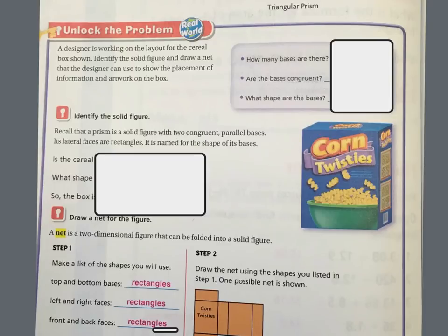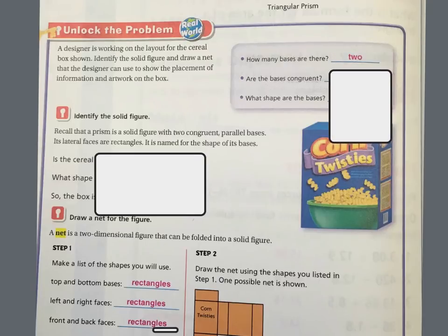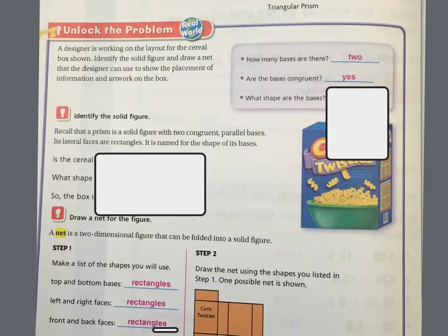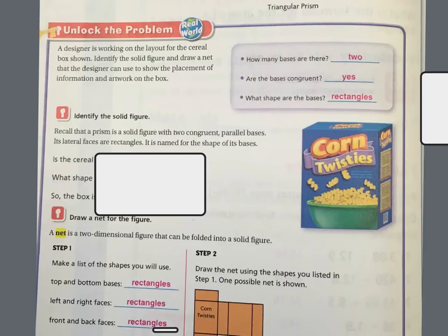First I want to know how many bases are there. Well, there's the base down here and the base up here, so there are two bases. Are the bases congruent? That means are they equal, are they the same? Well yes, the bottom and the top are exactly the same. The last part asks what shape are the bases? Well, the shapes of my bases are rectangles. You can kind of see the shape on the top right here, and the shape on the bottom is the exact same.